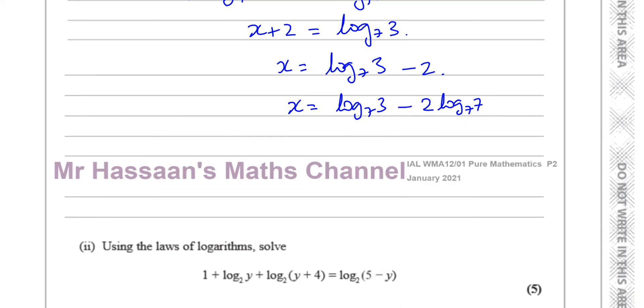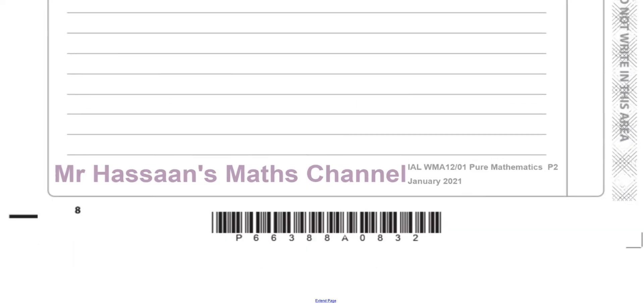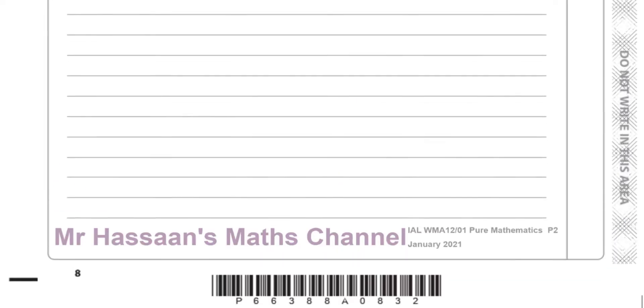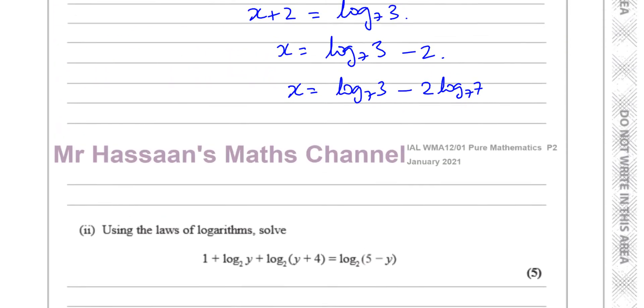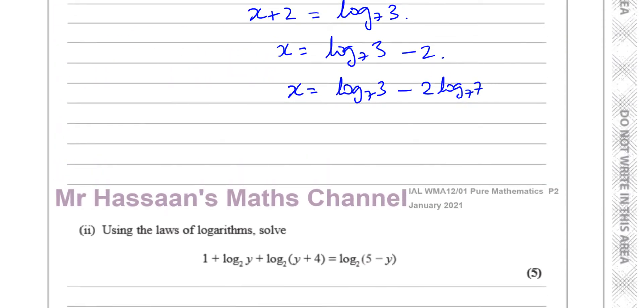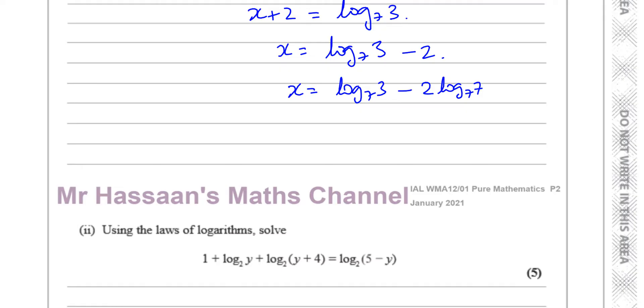Because I've got these two with the same base, and I can combine them eventually, but I have to just modify it a little bit. I have to get rid of the power there. So I have to use the power law in the opposite way and write this as x equals log to the base 7, 3 minus log to the base 7 of 7 squared. 7 squared, which is going to be 49.